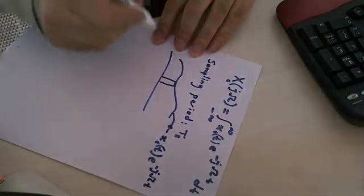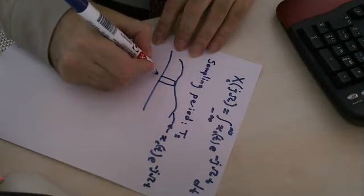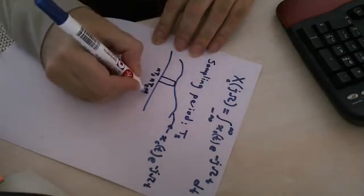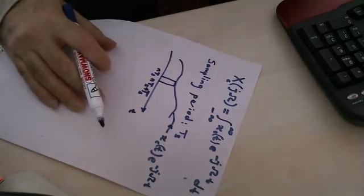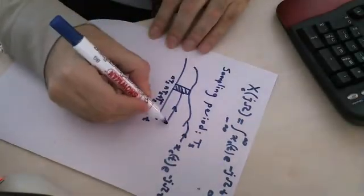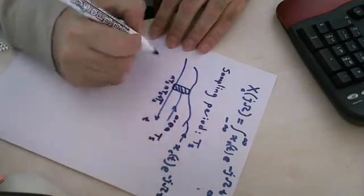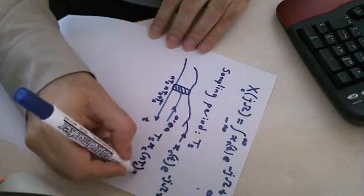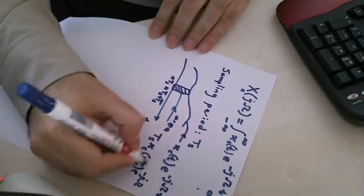And distance between two sampling intervals is TS. Let's assume that this is NTS, and this is NTS plus TS. This is my time axis, integral is with respect to T. So, the area of this rectangle is TS times the value of the function, XC NTS, e to the minus j omega NTS.